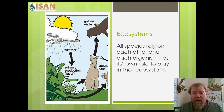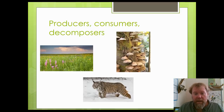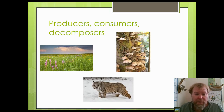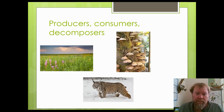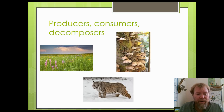In ecosystems, all species rely on one another, and each organism has its own specific role to play. Some of those specific roles could be as a producer, a consumer, or a decomposer. The picture on the left is a grassland or prairie full of grasses. Grasses are considered producers, and producers make their own energy — their own food — from sunlight.